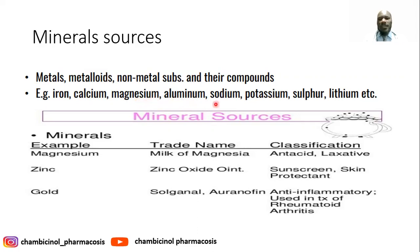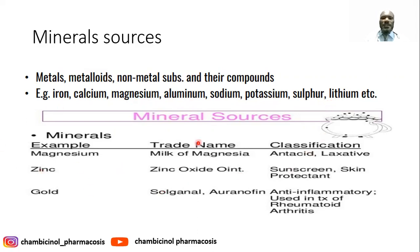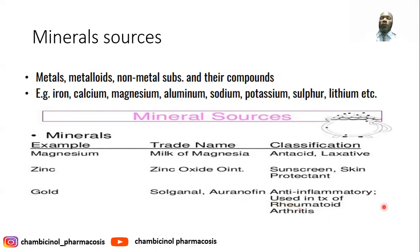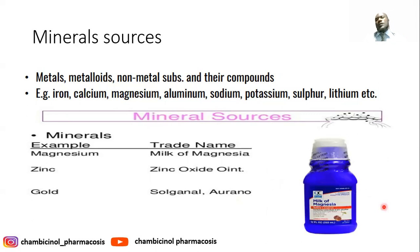Other mineral sources include aluminum, sodium, potassium, sulfur, and lithium compounds. Some examples include zinc oxide for skin protection, and auranofin, an anti-inflammatory used for rheumatoid arthritis. The picture indicates the Milk of Magnesia, which is used as an antacid or laxative.